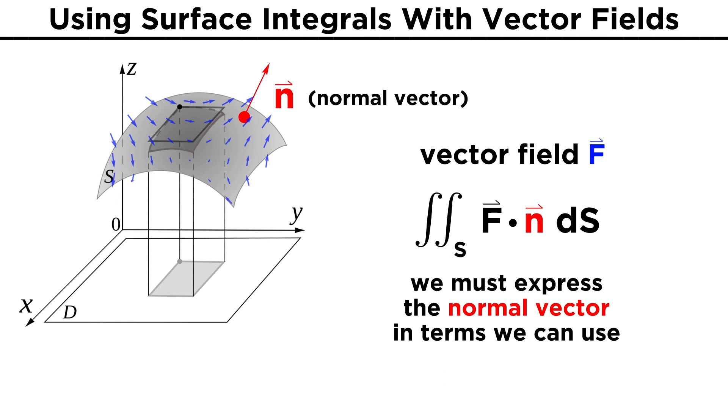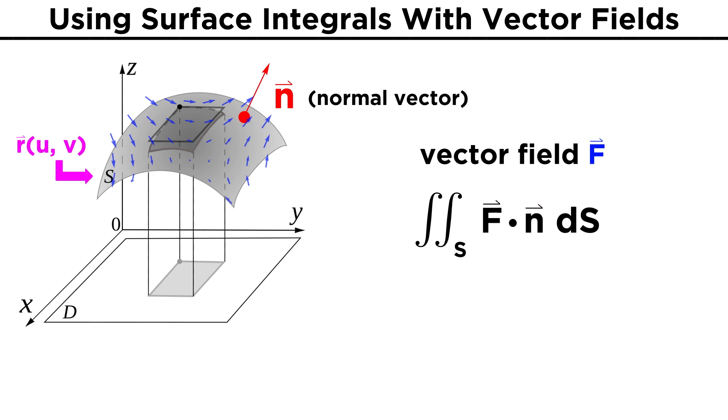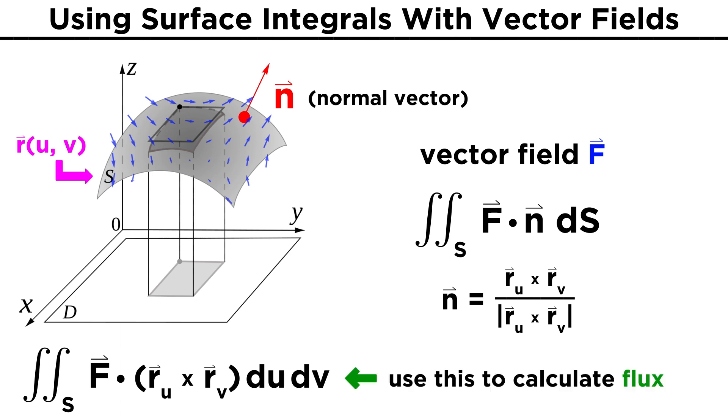In order to go through calculations, we must know how to express the normal vector in terms we can use. For surfaces that are given by a parameterized R vector like we discussed earlier, the N vector ends up being equal to R U cross R V divided by the magnitude of R U cross R V. So our surface integral becomes F dot R U cross R V divided by the magnitude of that cross product dS. But recall that dS equals the magnitude of the cross product times dU dV. Plugging this in cancels the magnitudes out, leaving us with the double integral F dot R U cross R V du dV.